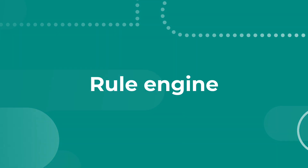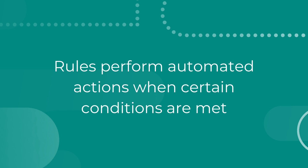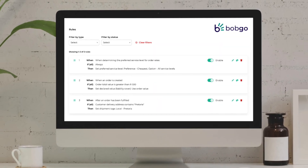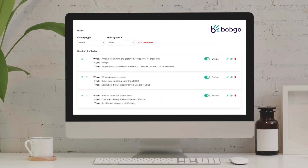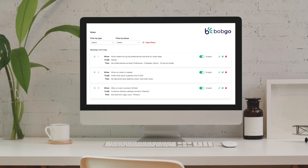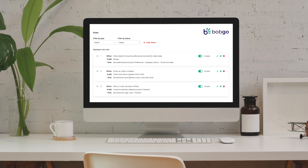The BobGo rule engine is a powerful tool that enables users to streamline and automate their order and fulfillment processes based on a set of predefined rules. Rules perform automated actions when certain conditions are met. Each rule type will trigger an action based on specific conditions which are linked to a variety of attributes like order tags, order weight, order value, and so on.